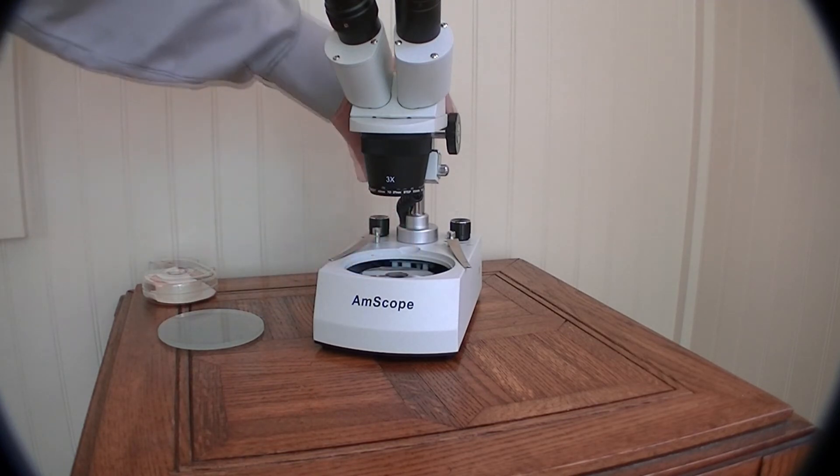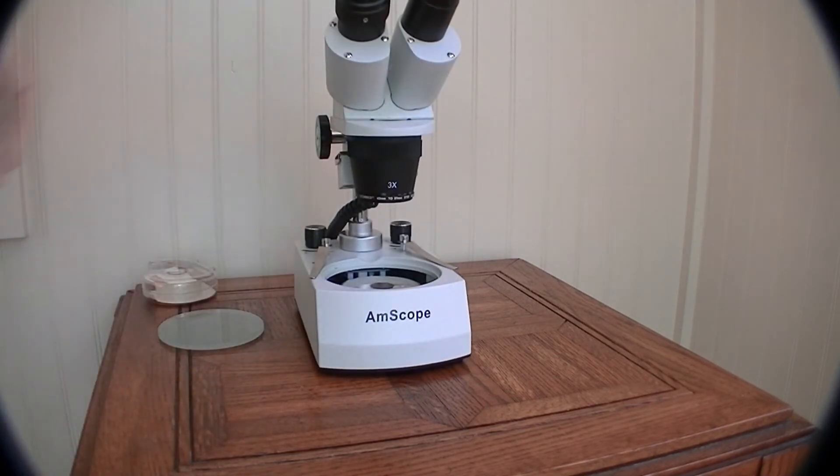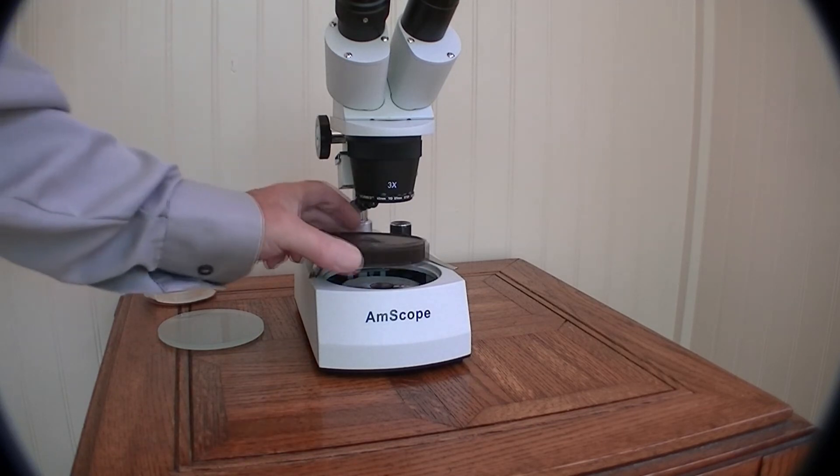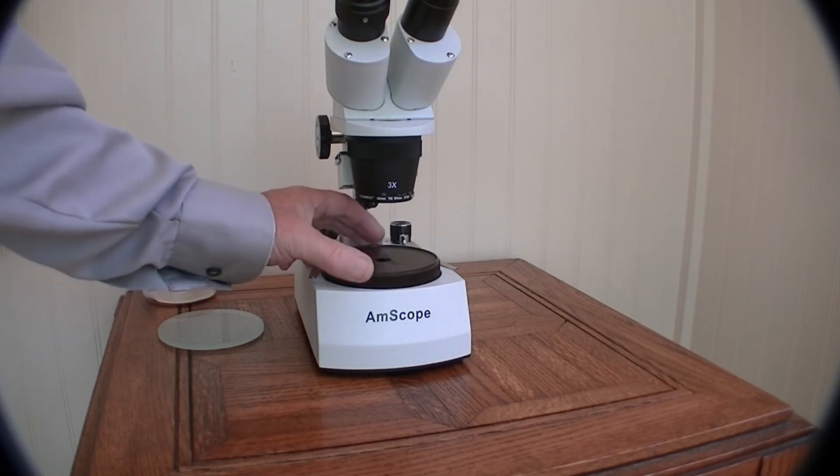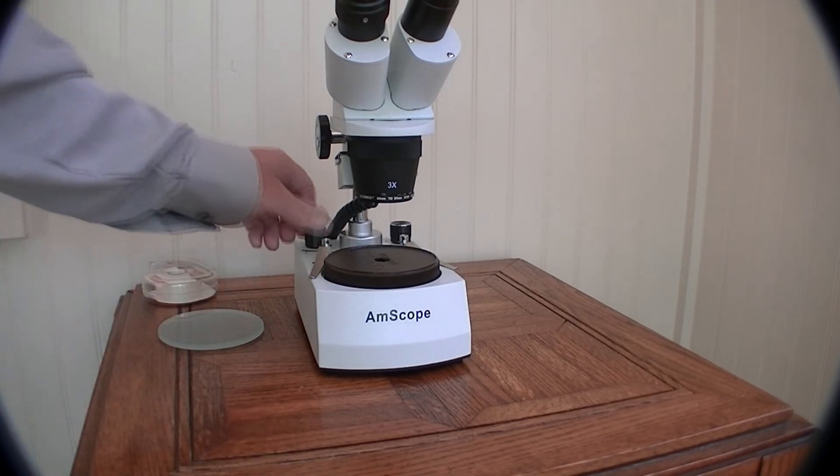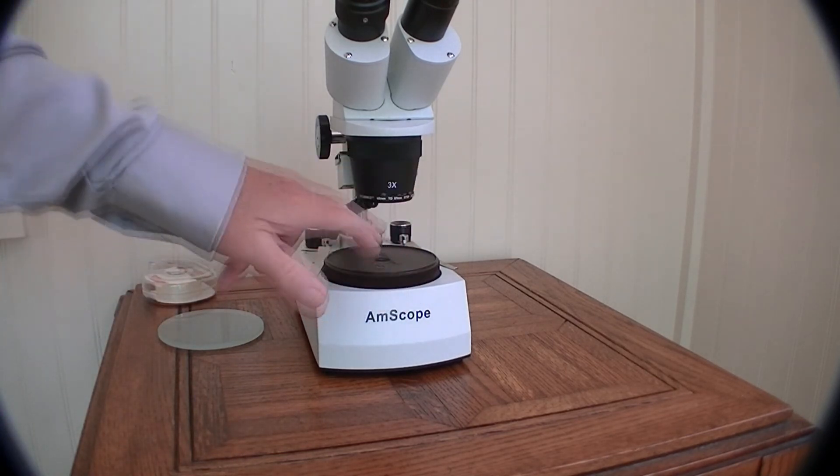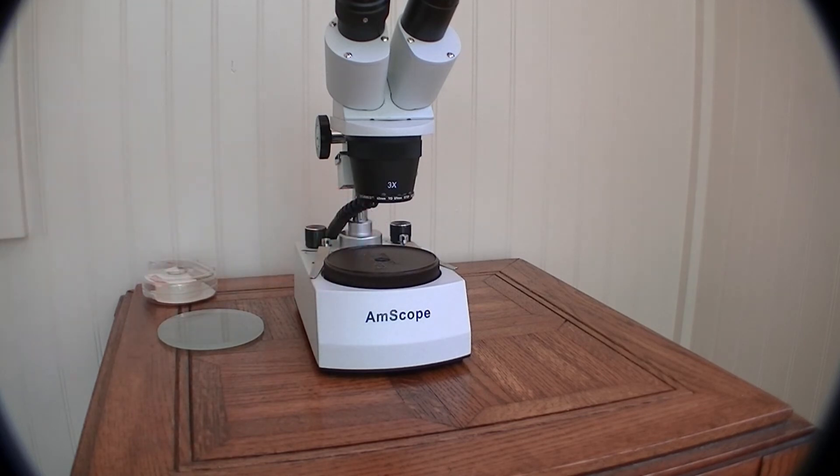That sits in the microscope like that. Then we place our Talenti stage on top there. Now when we turn the light on we should just get a cone of light coming out either side but nothing directly into the objective.